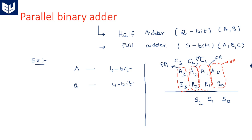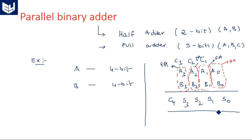By making the first carry input equal to zero, we can use a full adder for all stages including the first. So A3, B3, C3 are added together and produce S3, and carry C4 is generated, which has to be taken along with the sum.